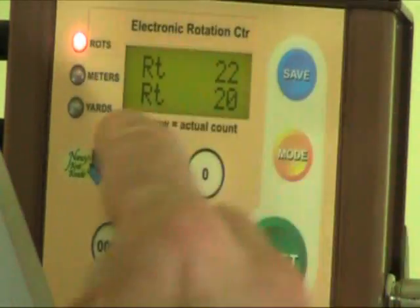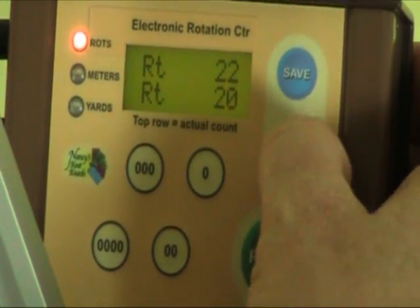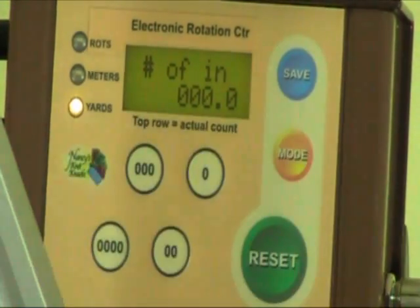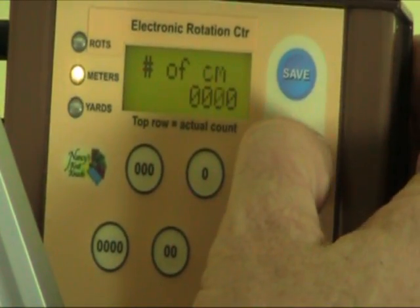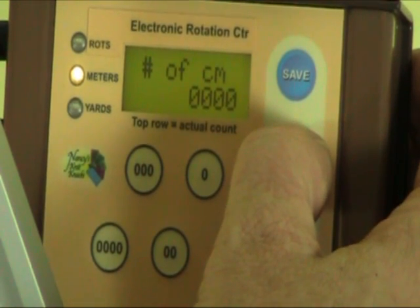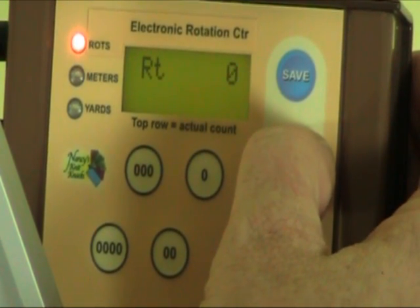So in this case, I'm going to change the mode. We have three modes on here: Rotations, which is RT. It's going to ask us how many inches is in the circumference of the skein. We can also go to meters, which would ask us for centimeters, and back to rotation. So there's three modes.